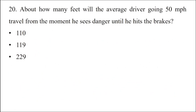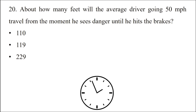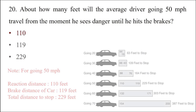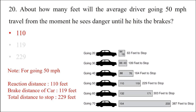Question: About how many feet will the average driver going 50 miles per hour travel from the moment he sees danger until he hits the brakes? Option 1: 110. Option 2: 119. Option 3: 229. The answer is option 1: 110 feet. For 50 miles per hour, reaction distance is 110 feet, braking distance is 119 feet, and total distance to stop is 229 feet.